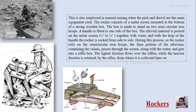The second method is the rocker, also employed in manual mining where picks and shovels are the main equipment. The rocker consists of a metal screen mounted at the bottom of a strong wooden box. The box is made to stand on two semi-circular iron hoops at the bottom, which allow it to rock. A handle is fitted on the side of the box. The alluvial material is poured onto the metal screen, which has a mesh size of about a quarter to half inch, together with water.